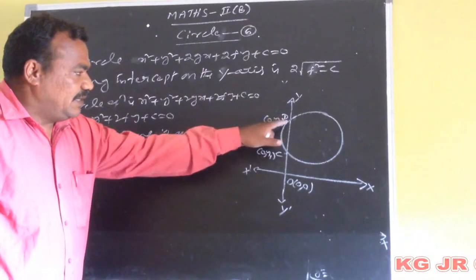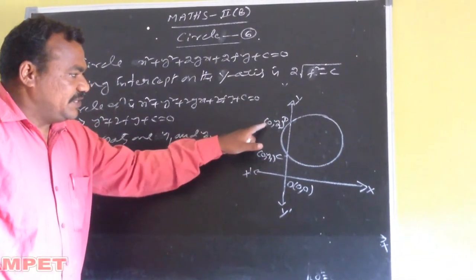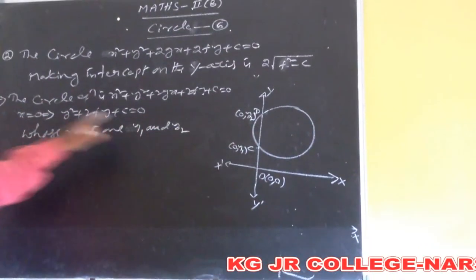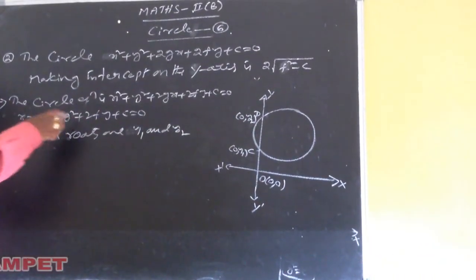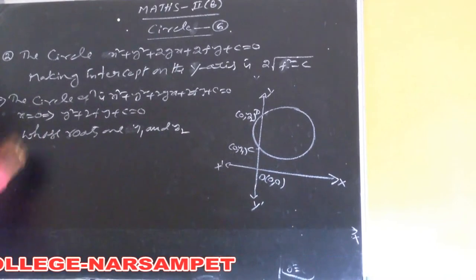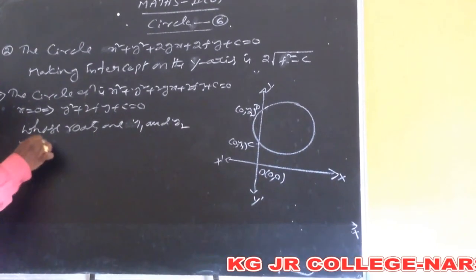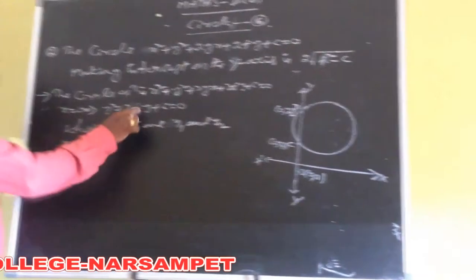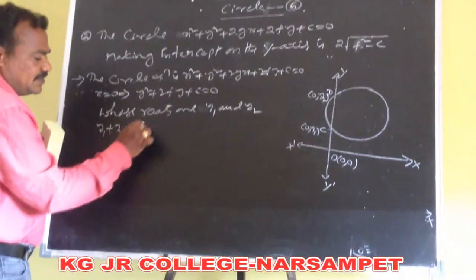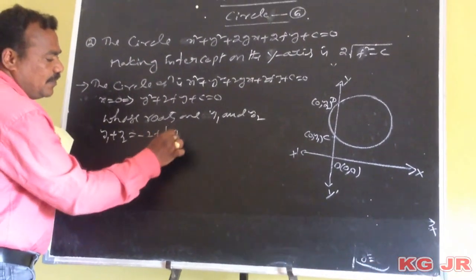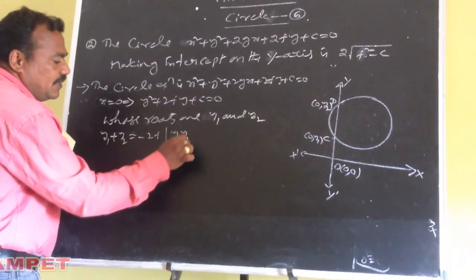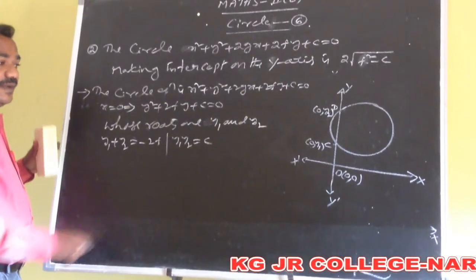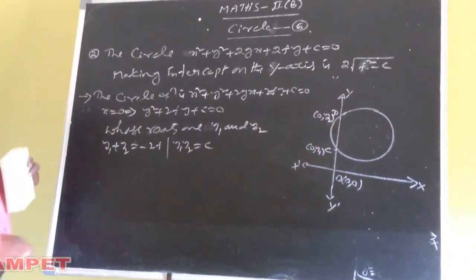Now we write the sum of the roots of this quadratic equation: y1 plus y2 equals minus 2f. And the product of the roots: y1 times y2 equals c. Now we have to find the distance between c and d, where c is (0, y1) and d is (0, y2).